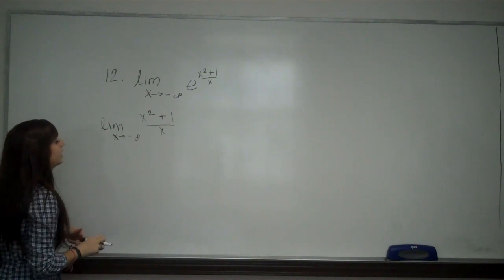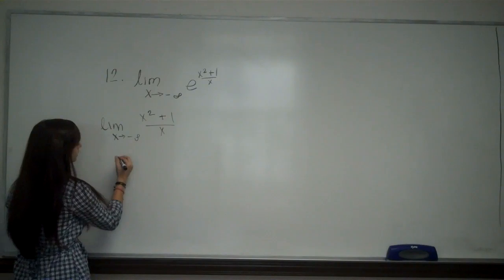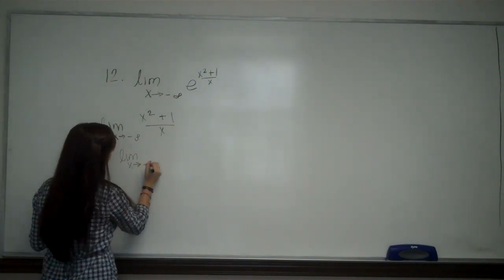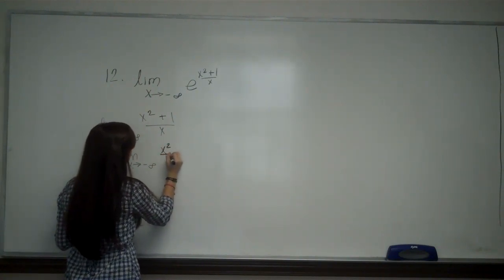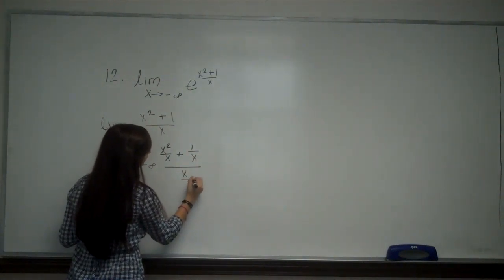Remember when I do this, I divide by the highest degree of the denominator. So I'm going to say the limit as x approaches negative infinity. The highest degree is just x, so I'll have x squared over x plus 1 over x over x over x.